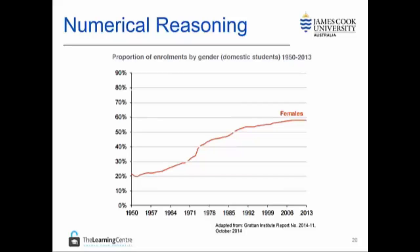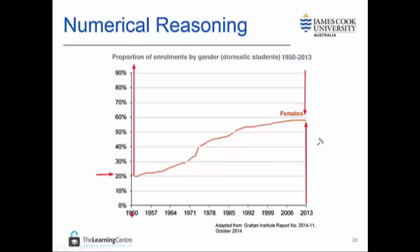It is therefore important to take some time to understand a graph before attempting to answer questions about it. Once we clearly understand what is represented in the graph, it becomes quite easy to answer questions relating to it. We can see that the rate of enrolments is around about 20% for females in 1950. That means all of the remaining proportion up to 100% is male enrolments. As the proportion rises in 2013 to almost 60%, the male proportion decreases.